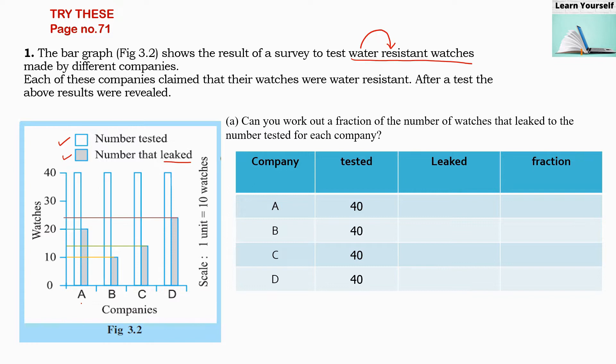These watches are not water resistant. So if a company has the maximum number of watches which leaked, that means it is not good. This count should be as low as possible — then only that company has good watches. Now let us find out how many leaked watches there are per company.